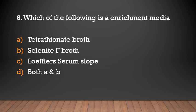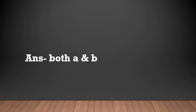Which of the following is an enrichment media? Tetrathionate broth, Selenate F broth, Loffler's Serum Slope, or both A and B? The answer is both A and B. Enrichment media contains substances that inhibit the growth of unwanted organisms. Common examples are Selenate F broth, Tetrathionate broth, and Alkaline Peptone water.